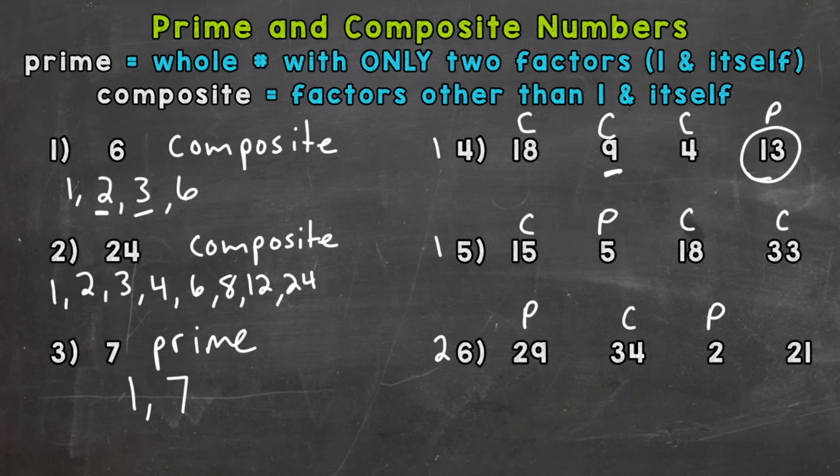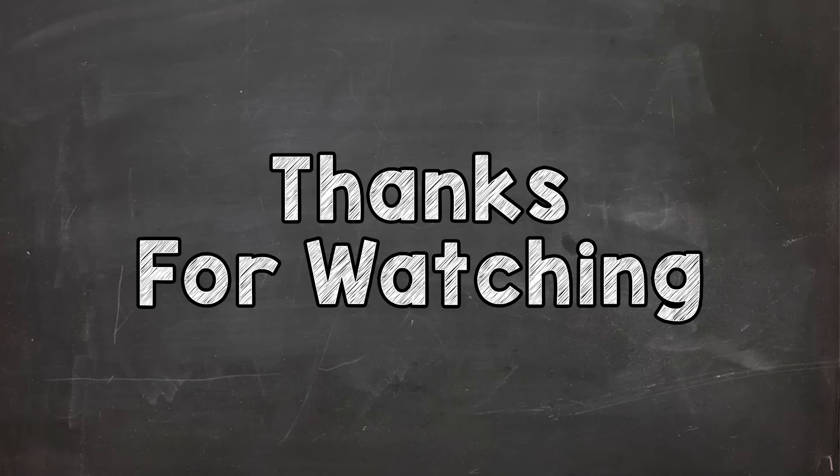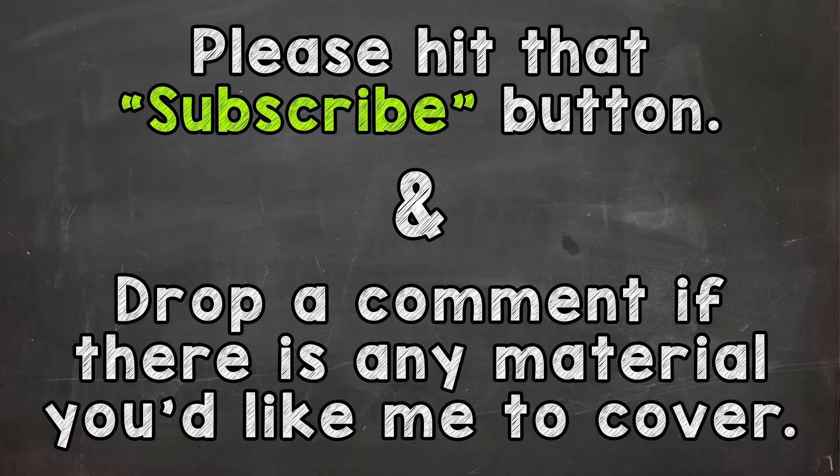Then we have twenty-one. Well, let's think. We have one and twenty-one. And then also three and seven as factors. So twenty-one is composite. So there you have it. There's the prime and composite number video. Hopefully that helped. Thanks so much for watching. Until next time. Peace.